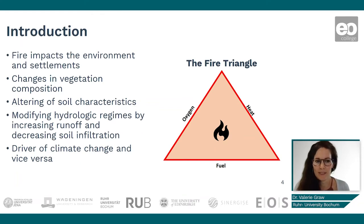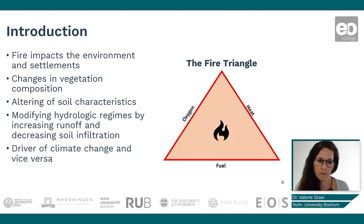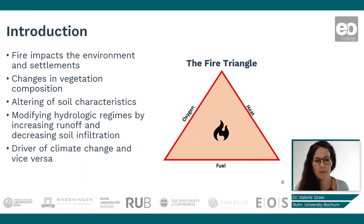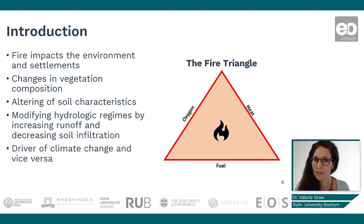Fire impacts the environment and settlements. We know this from the news when fires happen close to settlements or are destroying habitats of animals. They lead to changes in vegetation composition and an altering of soil characteristics. They also modify hydrologic regimes by increasing runoff and decreasing soil infiltration. They are a driver of climate change, but also vice versa — due to climate change we have an increase in frequency and intensity of fires nowadays.